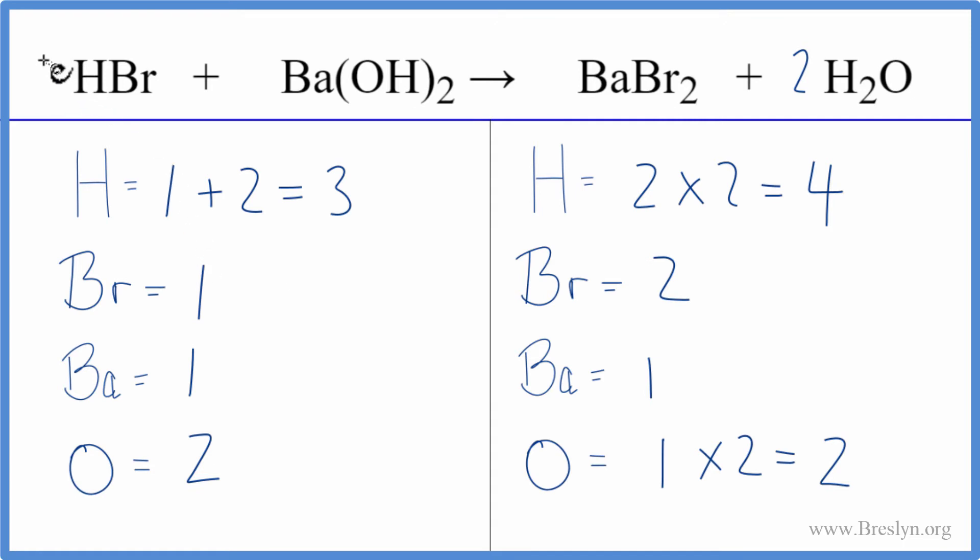It looks like I could put a two in front of the HBr, and that might give me a total of four hydrogens. Let's count them up again and see. So I have one times two plus the one here times the two. That gives me four hydrogens. And then for the bromine, I have one times two. It gives me two bromines, and those are balanced, and we're done.